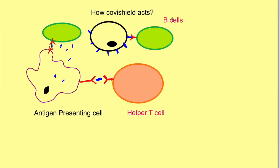There are also B cells. B cells get signals not only from antigen presenting cells, but also from the cells that were expressing spike proteins on their surface due to the adenovirus — they also send signals to the B cells. These helper T cells, as the name suggests, help the B cells. So the B cells receive the signal of the antigen plus a signal from the helper T cells, which recognize the same antigen and further activate the B cells.